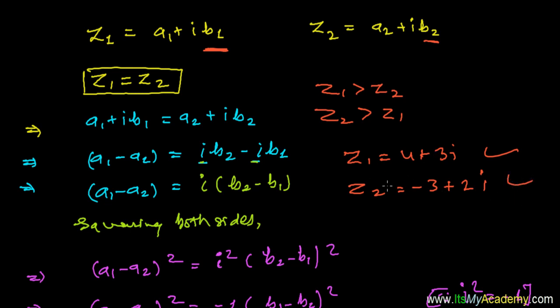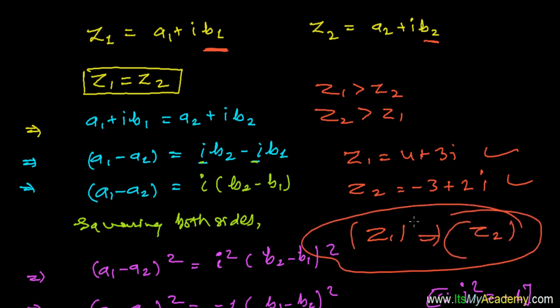I'm not talking about the absolute value. I'm not talking about the absolute value of Z1 and Z2. Simply I'm saying the value—Z1 or Z2, which one is bigger, which one is smaller? I cannot figure it out.